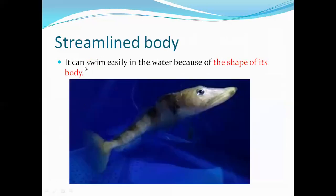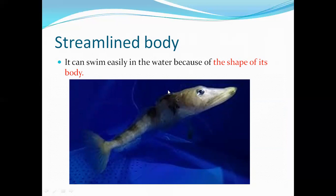Streamlined body. The fish can swim easily in the water because of the shape of its body. Fish has got a peculiar shape. This shape is called a streamlined body. Both ends are pointed — the center portion is wide but the ends are pointed. This shape helps the fish to swim very fast and move very fast in the water.